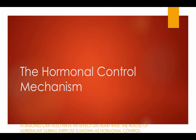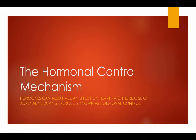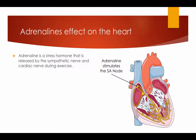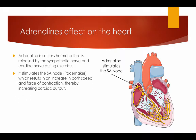The Hormonal Control Mechanism. Hormones can also have an effect on the heart rate. The release of adrenaline during exercise is known as hormonal control. Adrenaline is a stress hormone that is released by the sympathetic nerve and cardiac nerve during exercise. It stimulates the SA node, which results in an increase in both speed and force of the contraction, therefore increasing cardiac output.